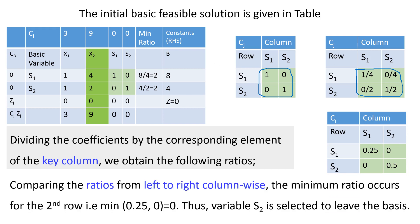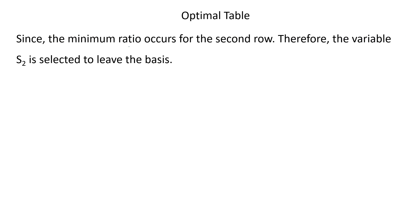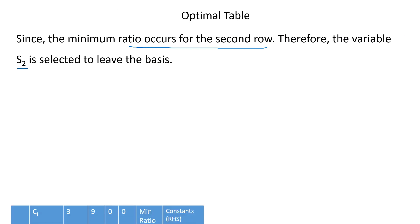Dividing the slack variable coefficients by the corresponding pivot column elements, we obtain ratios: 0.25, 0, 0, and 0.25. Comparing from left to right column-wise, the minimum ratio occurs in the second row, where the value is 0 (less than 0.25). Therefore, the variable s2 is selected to leave the basis as the leaving variable.